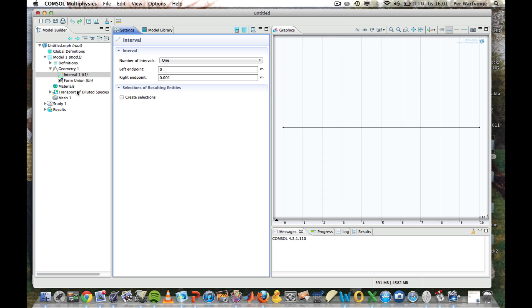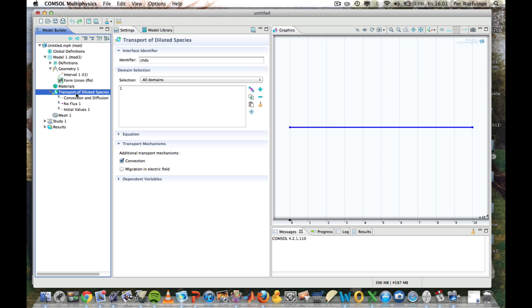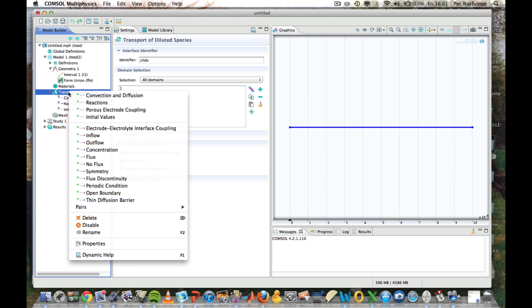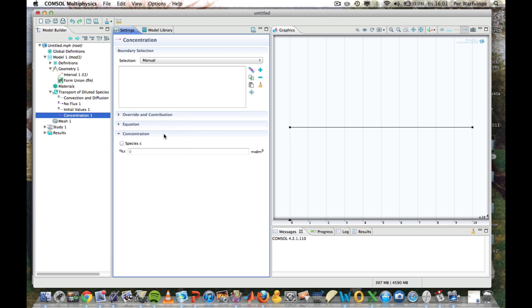The next thing we should do is to define the various parameters. We could start defining the various concentrations. Then we right-click and get the chance to select concentration. We select the left-hand border, or boundary, manually, and add the concentration, one.